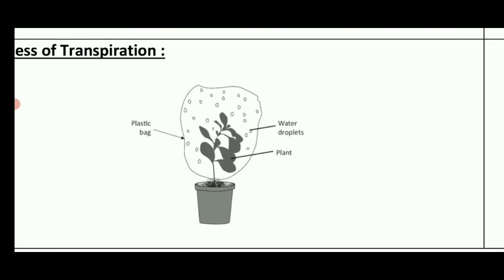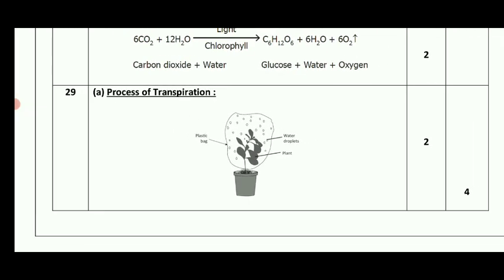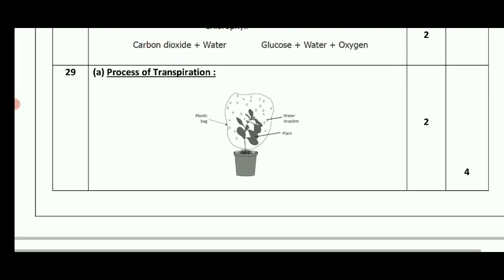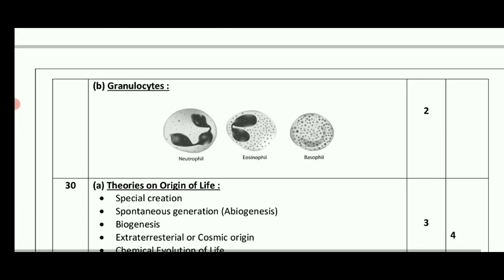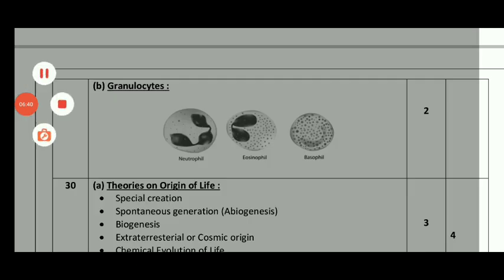The transpiration diagram shows the official answer: plant, water droplets, plastic bag — this is the process of transpiration diagram. The next one is granulocytes: neutrophil, eosinophil, basophil. This is the 3 mark and 2 mark section.